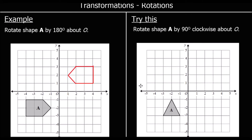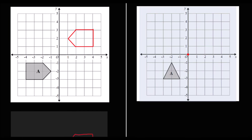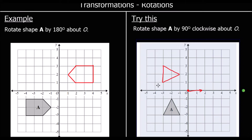Here's another question: rotate shape A 90 degrees clockwise about the origin. We've got shape A rotating 90 degrees about the origin, so we can use tracing paper. We'll have a line going up, and we're moving this line 90 degrees clockwise, so it will be on the x-axis. Then we'll draw around the shape and rotate 90 degrees clockwise. This is our new shape. I'm going to draw the shape on, take the tracing paper away, and there is our rotated shape.